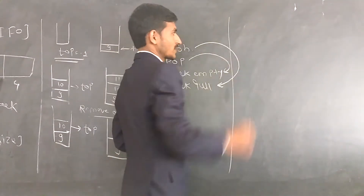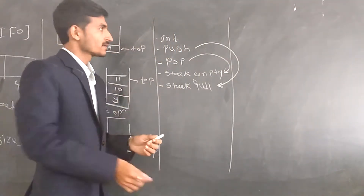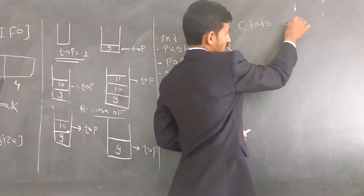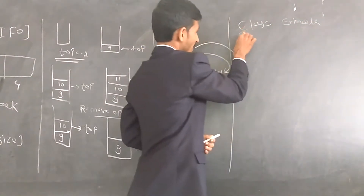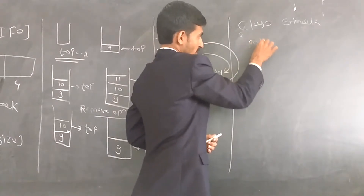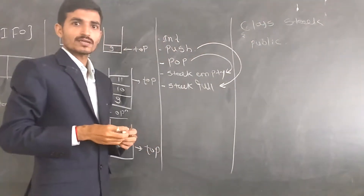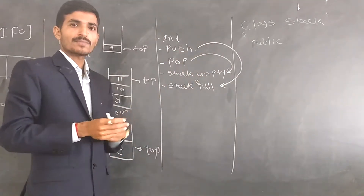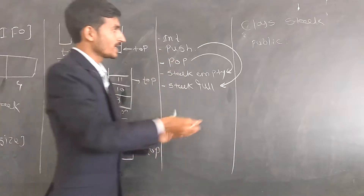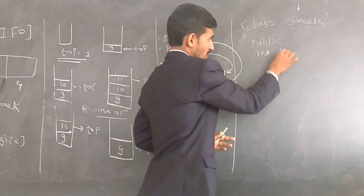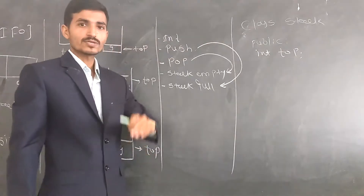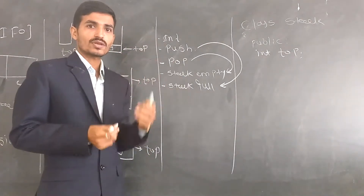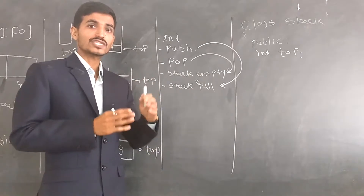In C++, suppose we need to initialize the members of a stack. I'll take a class called stack having data members. Public, private, and protected are the access specifiers we can use. If I take public, that means the member is accessible throughout the program. But in C++, it is not possible to initialize a member inside a class directly. For that purpose, we have to use a feature of C++ called a constructor.